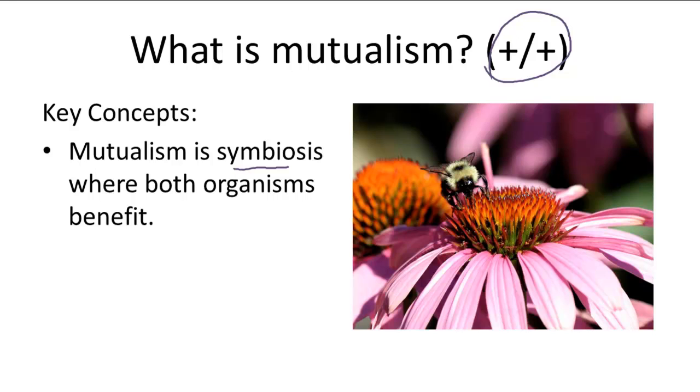The easiest example of a mutual symbiotic relationship is what we commonly know: the bee and the flower.